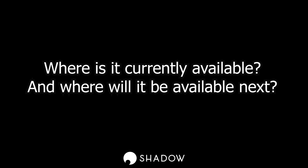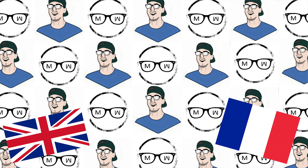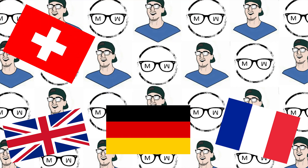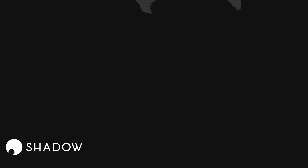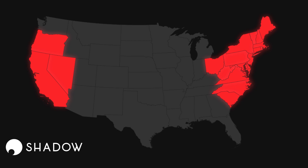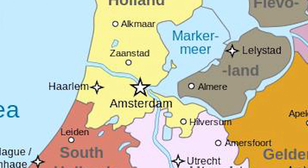One heartbreaking thing I keep seeing in comments is people who get excited and go to sign up, only to find Shadow isn't available in their country yet. Currently Shadow is available in the United Kingdom, France, Germany, Switzerland, Belgium, Luxembourg, and the United States on the west and east coasts. Current expansion plans include opening a new data center in Amsterdam due to open next week, and nationwide US coverage by the end of October.